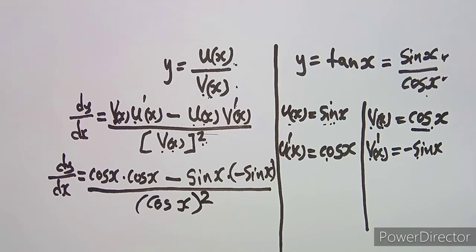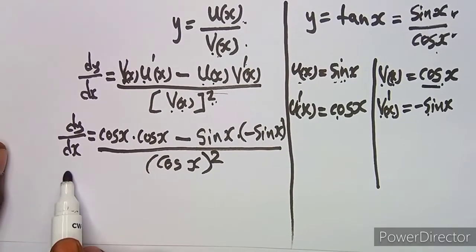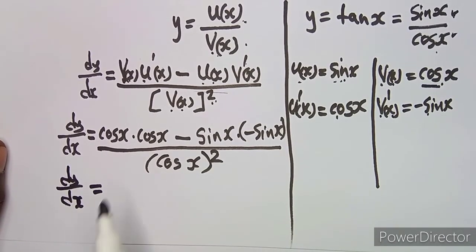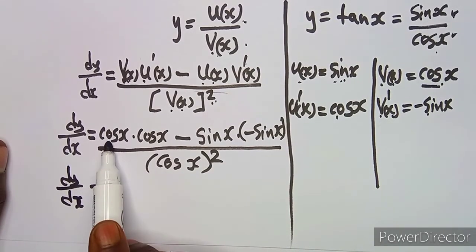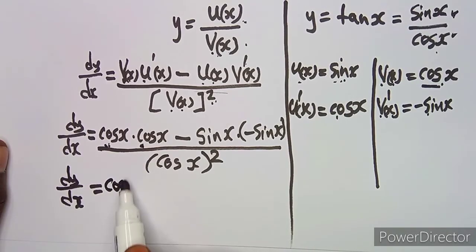You have substituted but it's not final — you need to simplify until you can't simplify further. Let's see what we can simplify. Cos times cos gives us cos²x.